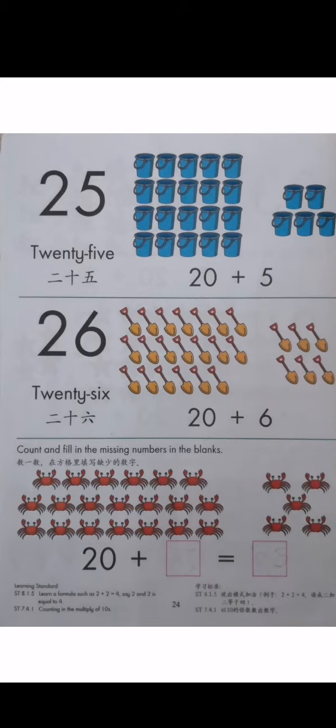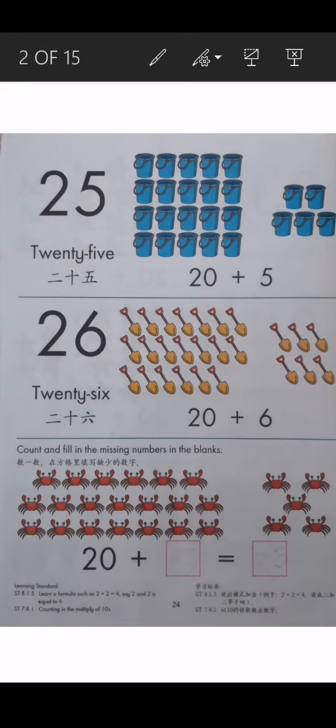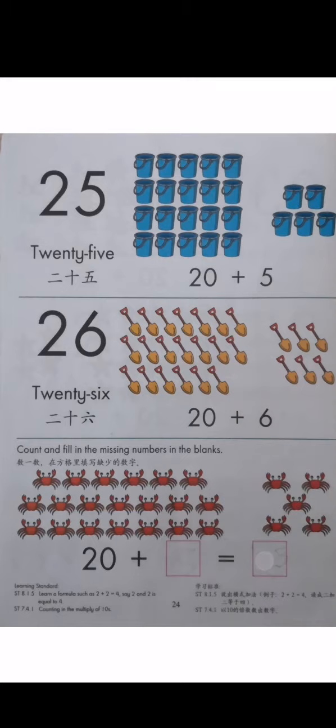Now let's look at the bottom: count and fill in the missing numbers in the blanks. First, 20 is already given to you. Next, you have to count the right side. Let's count together: 1, 2, 3, 4, 5. There are 5 more crabs beside, so please write 5 here. And 20 plus 5 equals 25.